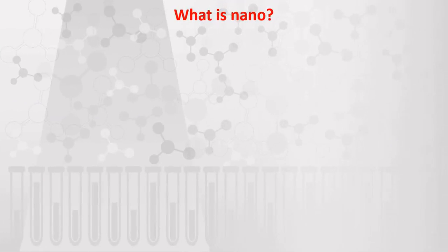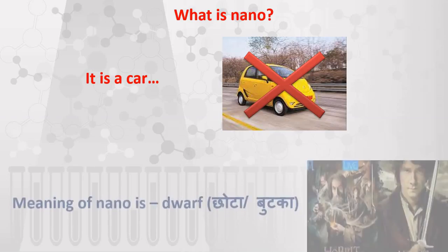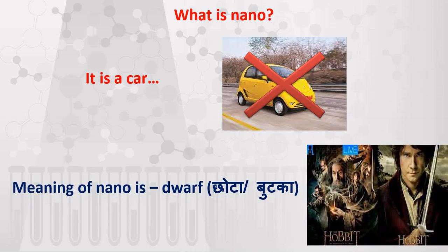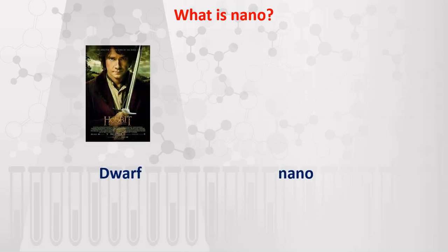Now we will see what this 'nano' actually is. Where does the nano word come from? We know that Nano is also a car, but in chemistry, we are not considering the Nano car or studying its properties. Nano is a word whose meaning is nothing but 'dwarf', which means small. In the Hobbit movie there is also a dwarf — but if you compare the nanoparticle, a dwarf you can see, but the nano particle you cannot. It is a very small particle or compound which cannot even be seen by the naked eye.